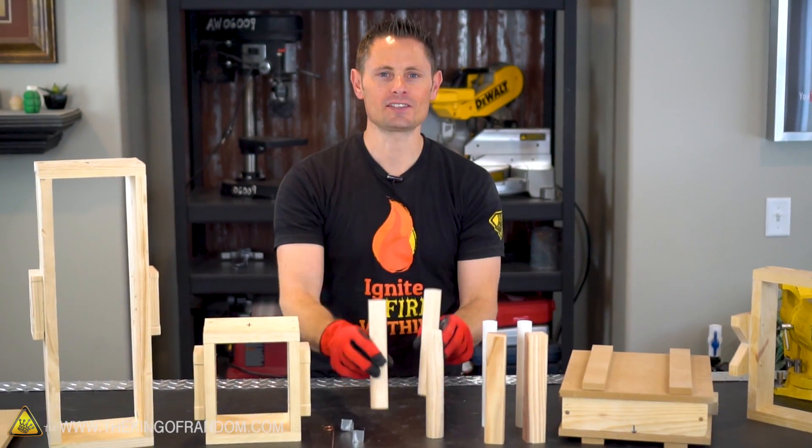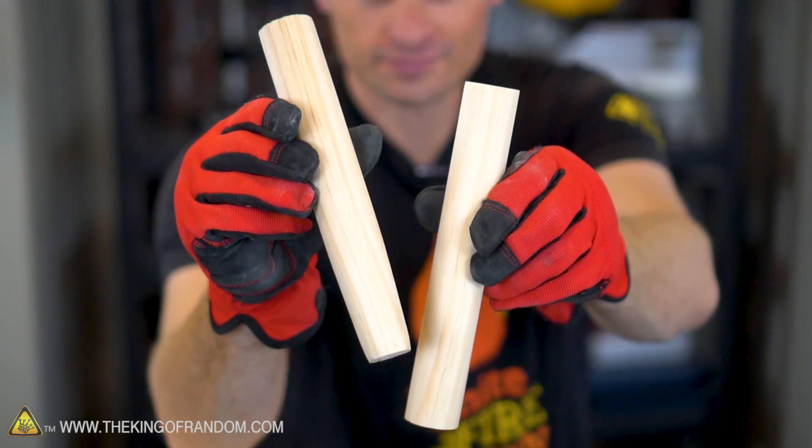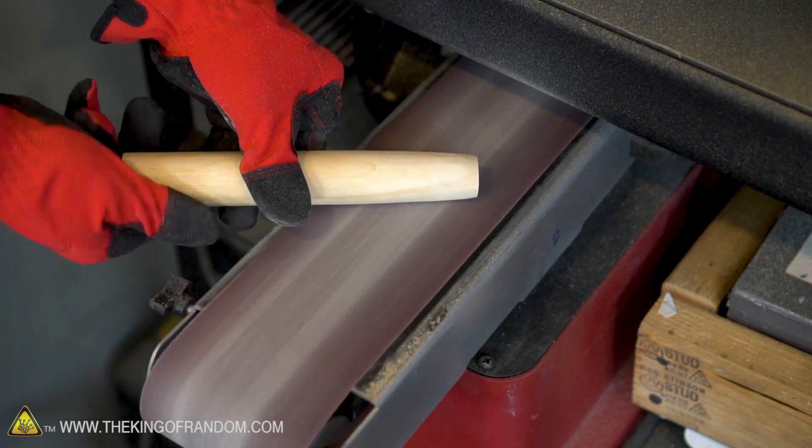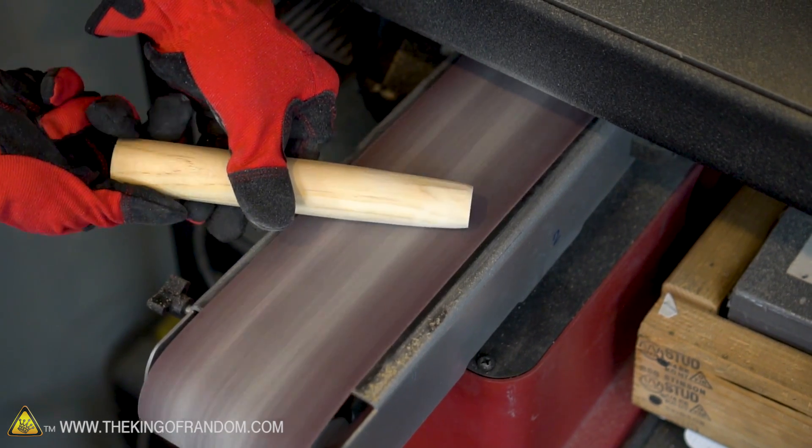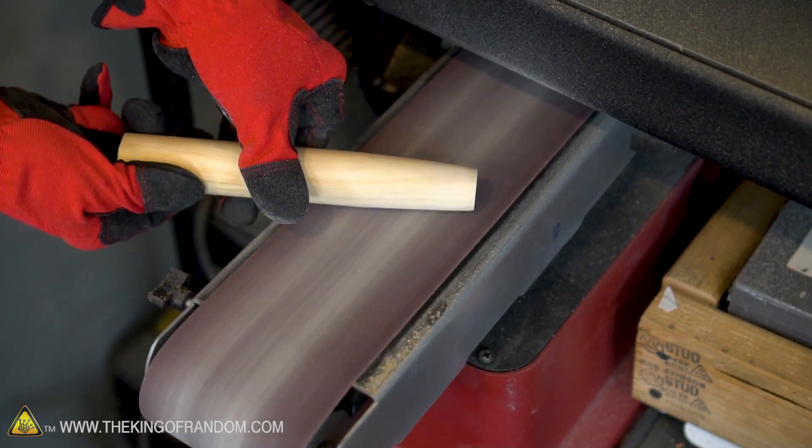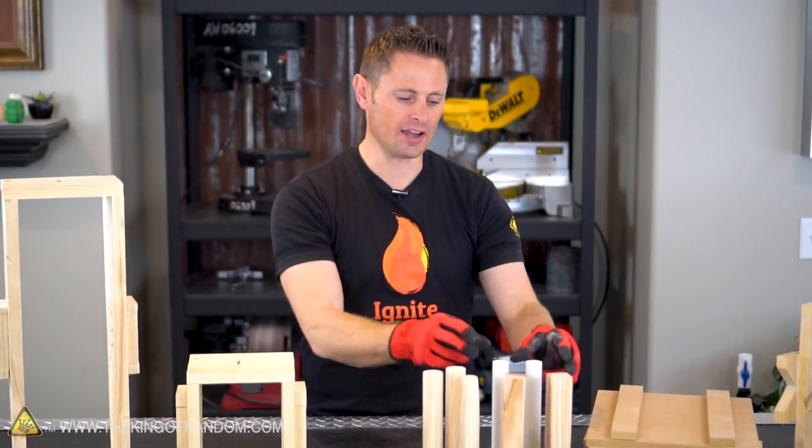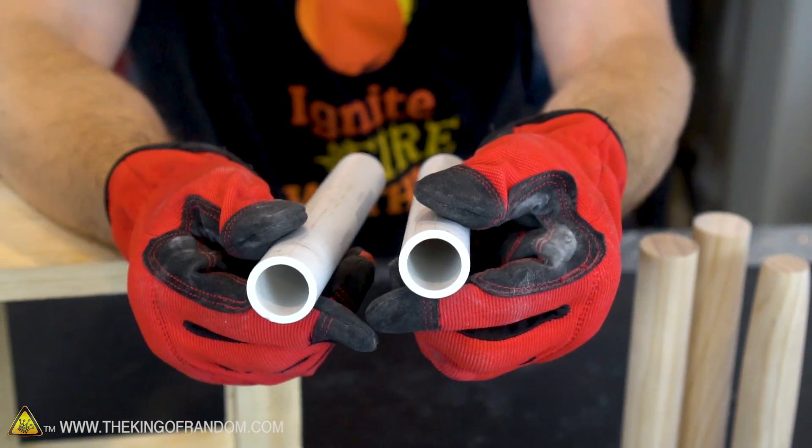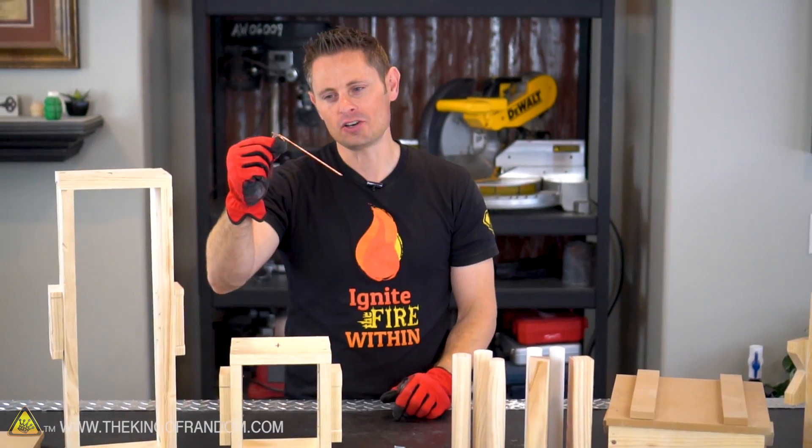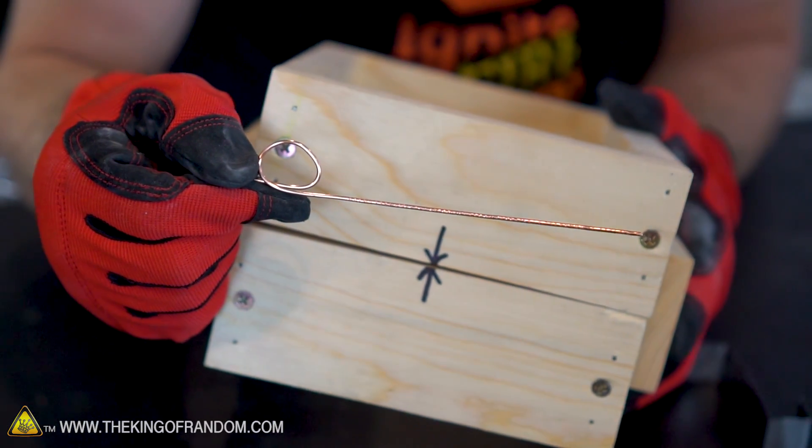I also cut a couple of 8 inch lengths of these 1 and 1 quarter inch dowels to act as sprues, and I threw one of them on the belt sander for a few minutes to give it this tapered edge, which should help it pop out a little bit cleaner. If we need our sprues to be a little thinner in diameter, I cut some 3 quarter inch PVC that should serve the same purpose, and I cut out a piece of 12 gauge home electrical wire that we can use to poke vent holes.